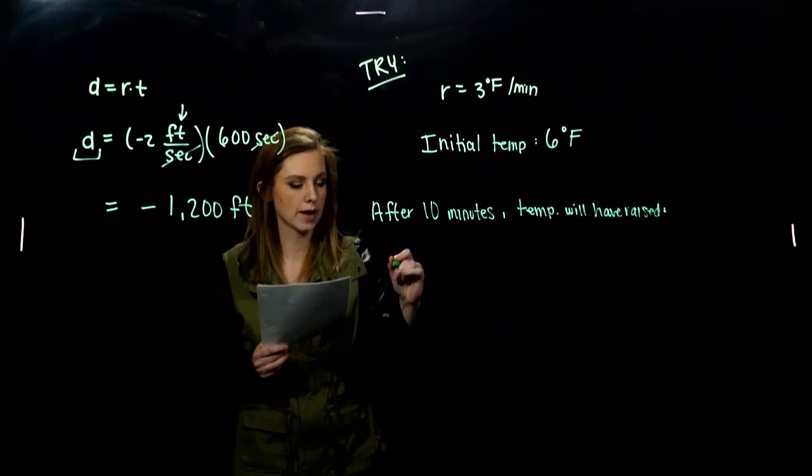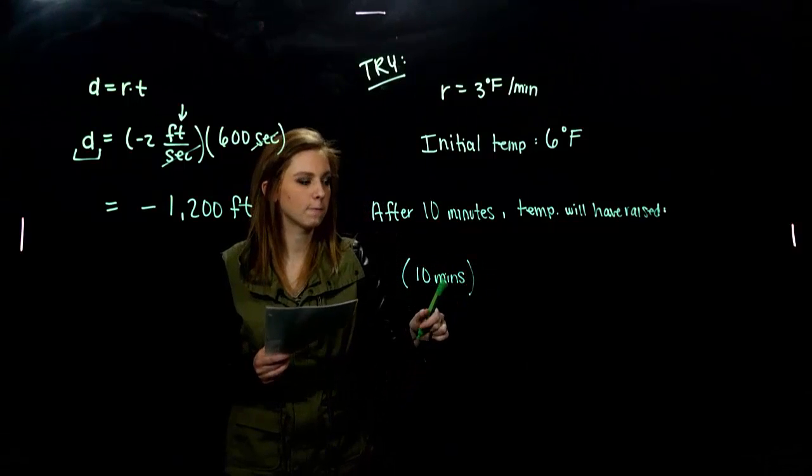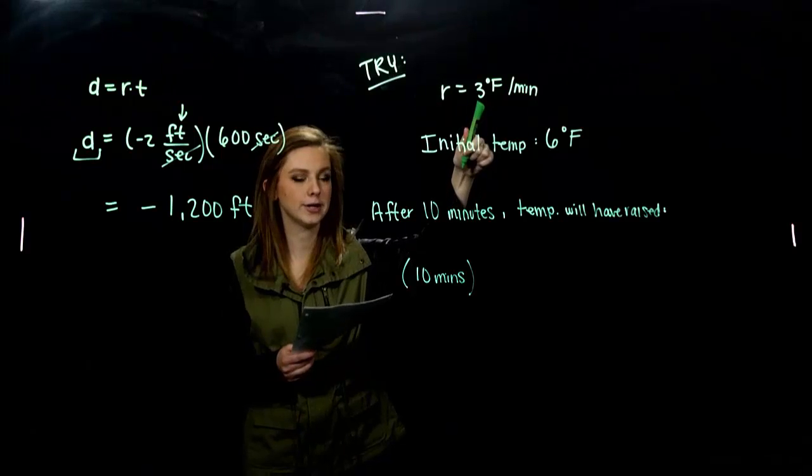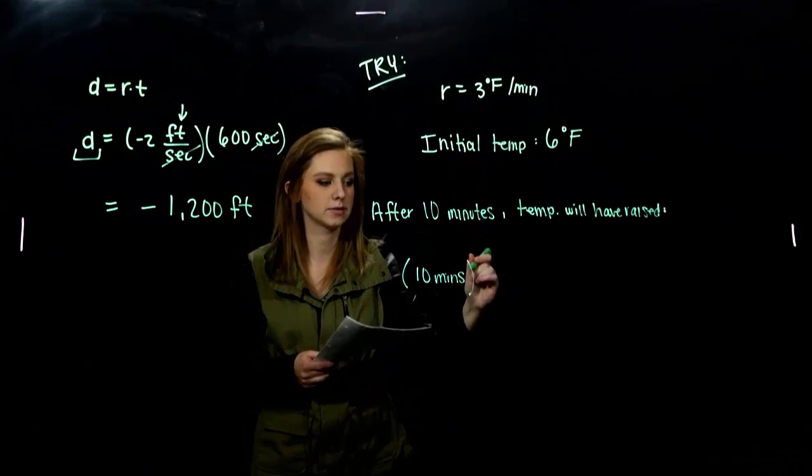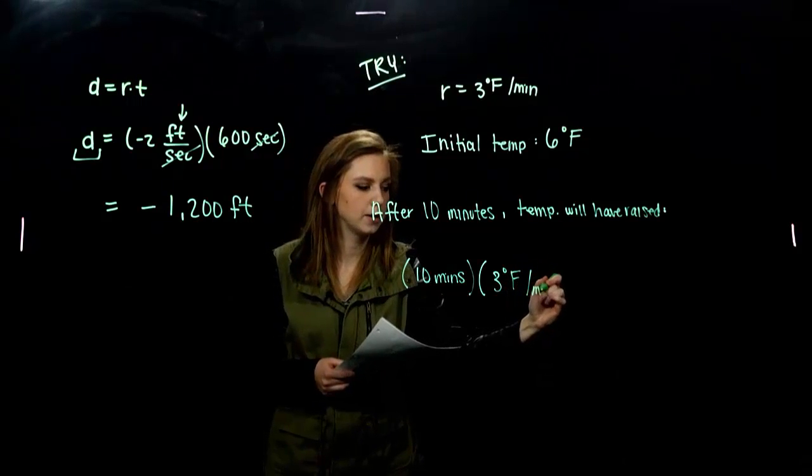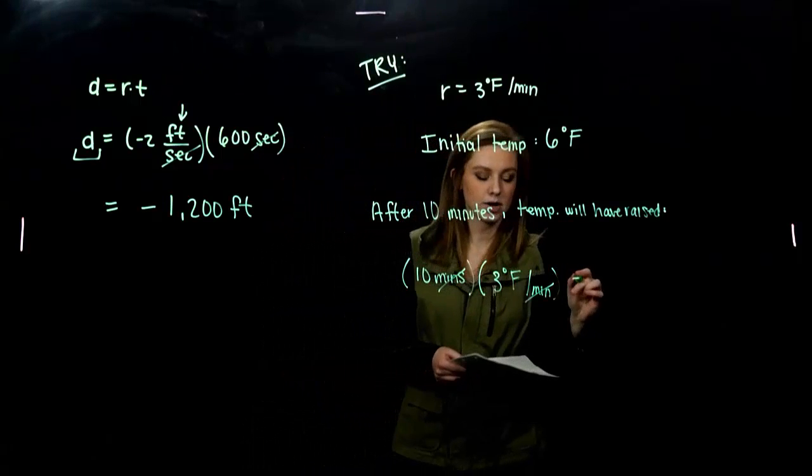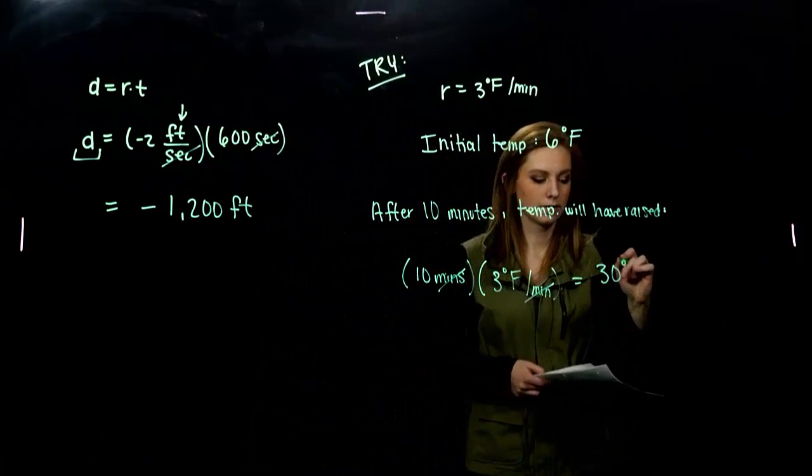Okay. So, I have 10 minutes that I'm looking at. And for every minute, it is increasing by 3 degrees. So, I need to multiply that by 3 degrees Fahrenheit per minute, the rate that it's increasing. Minutes. Minutes are going to be gone. And it's increased by 30 degrees.